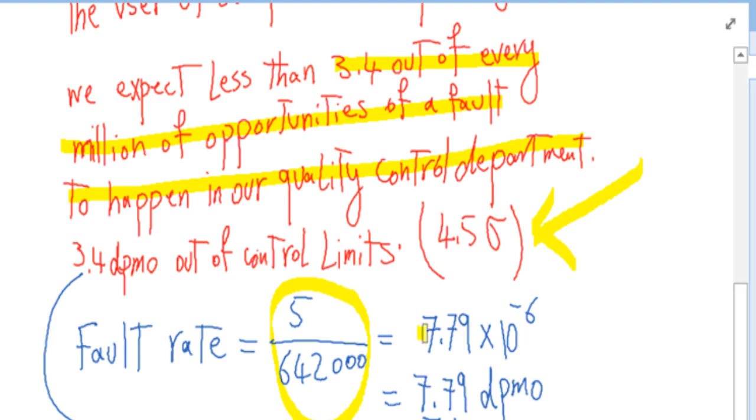If you do the math, you'll see that the fault rate is 7.79 multiplied by 10 to the power of negative 6. This means we have 7.79 defects per million opportunities.